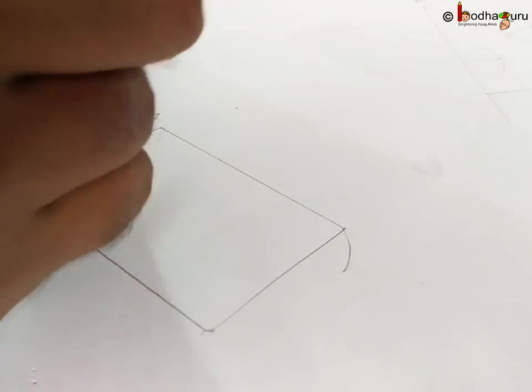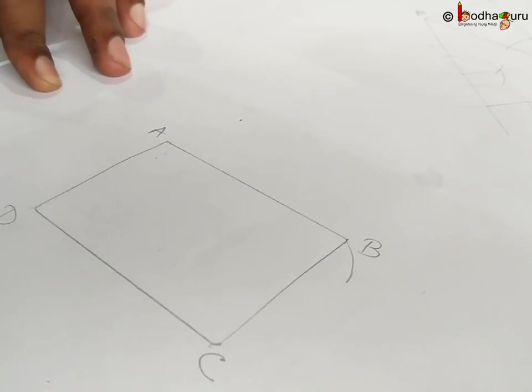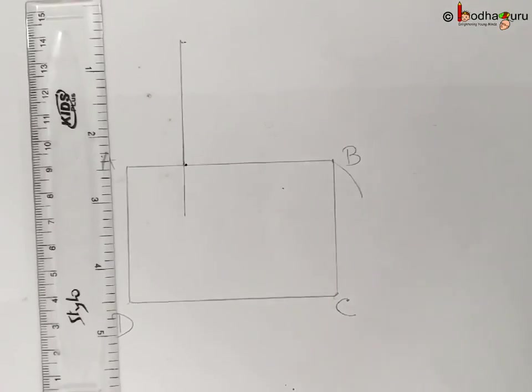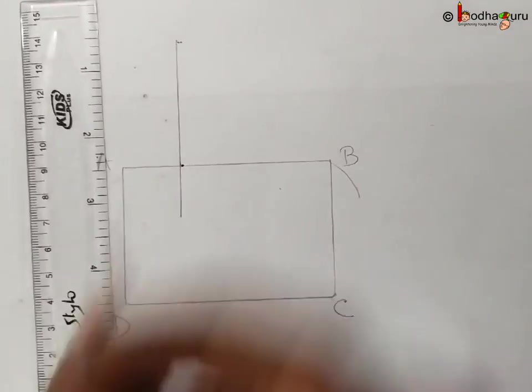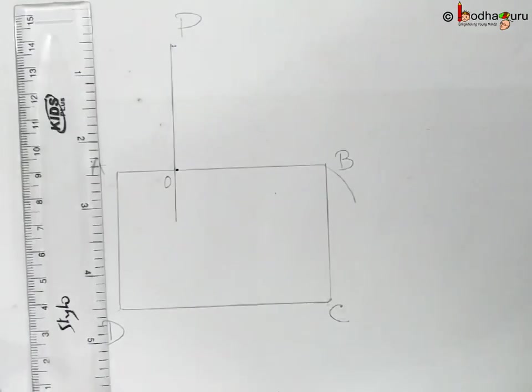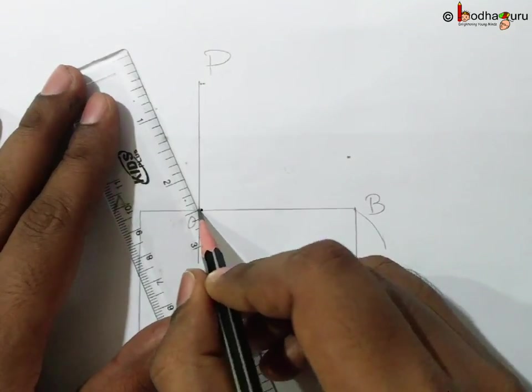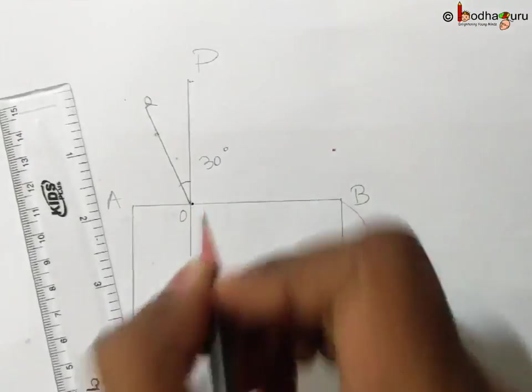We name the vertices A, B, C, and D. Now we remove the glass slab and draw a perpendicular on AB, which we name OP. Then we draw a line from O that makes a 30-degree angle with OP, meaning angle POQ is 30 degrees.